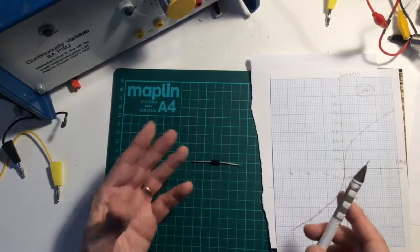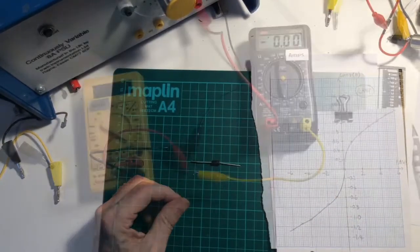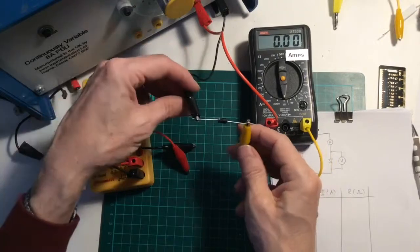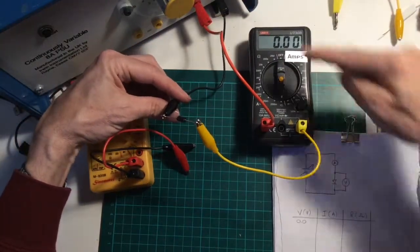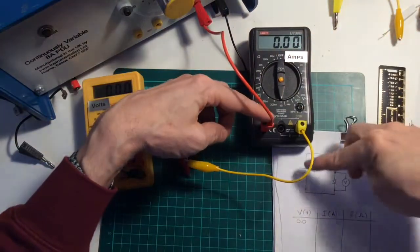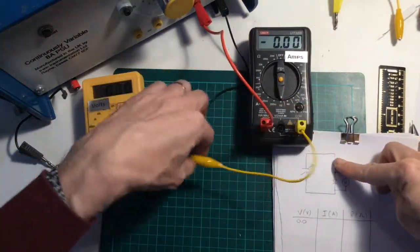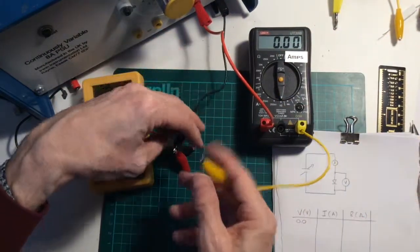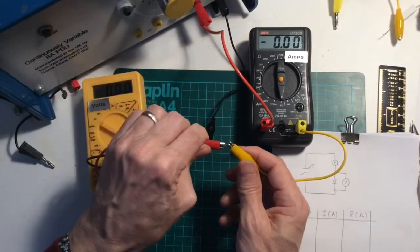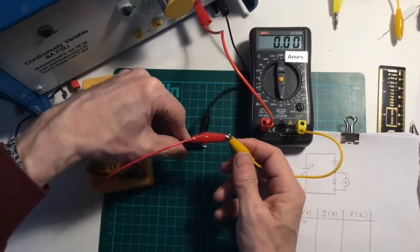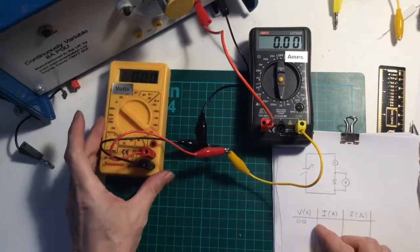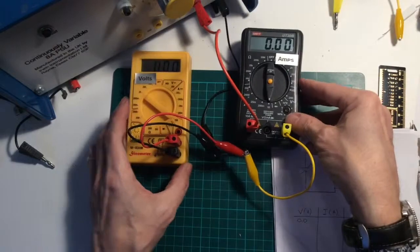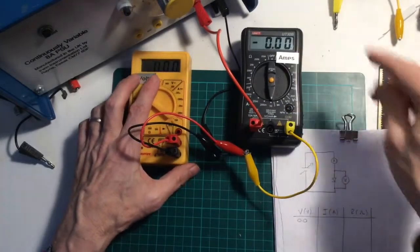So I've got to connect it up again in my circuit exactly the same as before. So I've got my diode connected with the ammeter, so this is the circuit I've got now. I've got the power supply connected to the ammeter, connected to the diode, and then back to the power supply, and I need to connect my voltmeter across the diode like this.